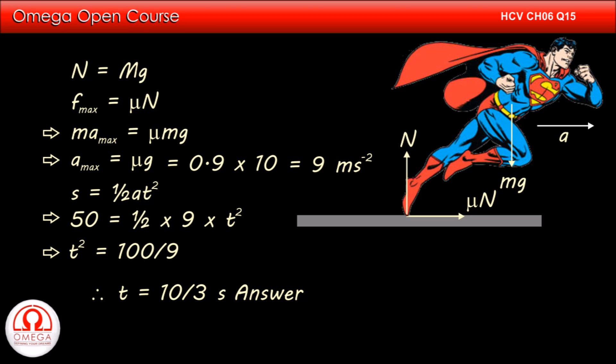When trying to stop, the acceleration is provided by the friction only. Therefore, the maximum possible acceleration is also 9 meters per second squared. Since the rate of acceleration and deceleration is the same, the time taken to stop must be equal to the time taken during acceleration. Thus, time taken to stop is also 10 by 3 seconds. This is the answer to part B of the question.